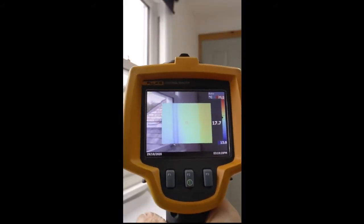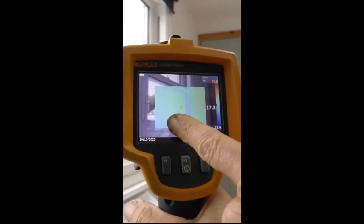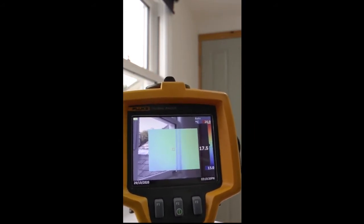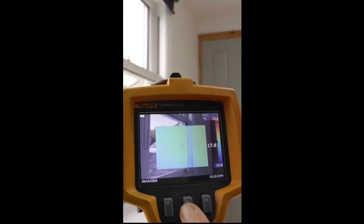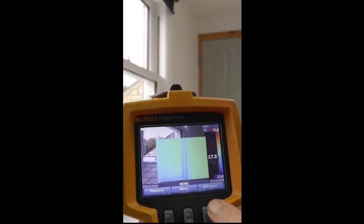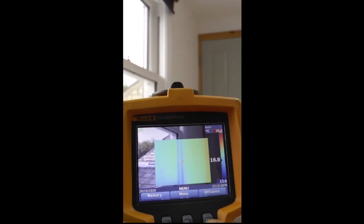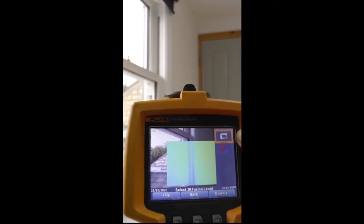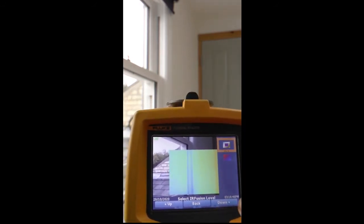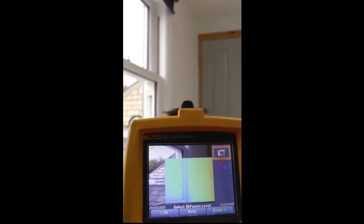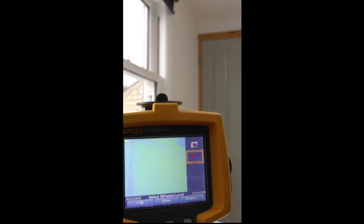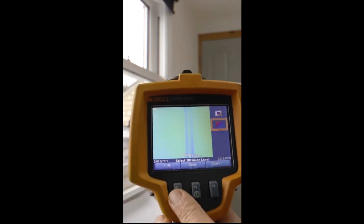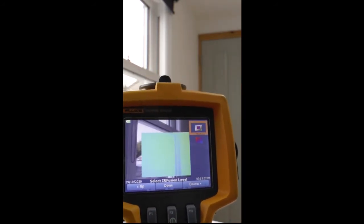Finally, let's check that the display is showing a thermal image in the middle and a visible image around the outside, which is what we want. If it's not showing that, then go through the menus and press F2. We want this option here: IR Fusion. Select that. At the moment we've got this picture-in-picture selection. If I go down here, it becomes all infrared, which is harder to interpret. So I recommend going back up here—we want this option with picture-in-picture.